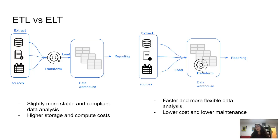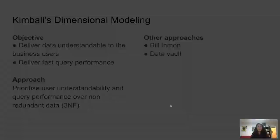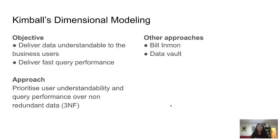Let's now dive more into the transformation step and review concepts around Kimball's dimensional modeling. The objective is to deliver data that is understandable to the business user while also achieving fast query performance. Unlike the third normal form, Kimball's dimensional modeling does not prioritize ensuring data appears only once — it's not focused on non-redundancy, but rather on user understandability and query performance. Other approaches worth exploring include Data Vault.